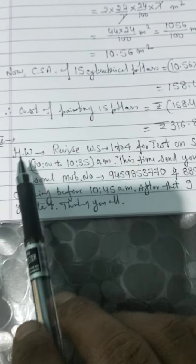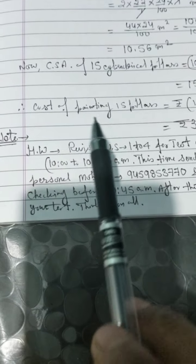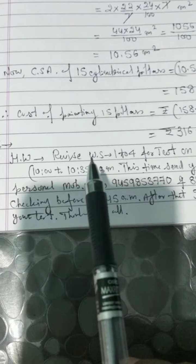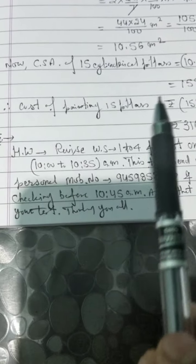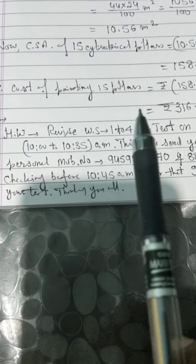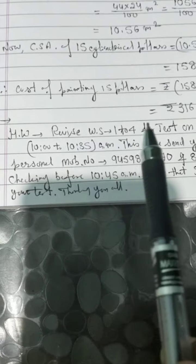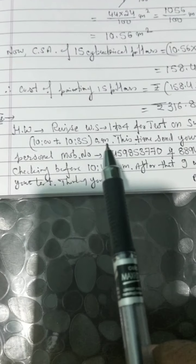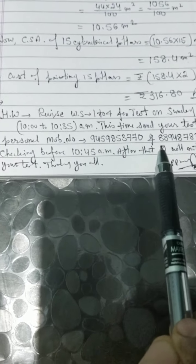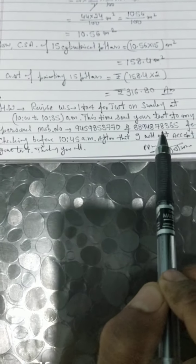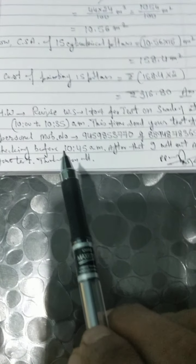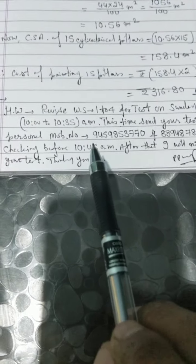Dear children, tomorrow will be your class test of worksheets 1 to 4 of mensuration. This time I have changed it a little — you send me your test after completion, as the test timing is 10 a.m. to 10:35 a.m. Before 10:45 a.m., all sections A, B, C, D send on my personal mobile numbers: 9459853700 and 8894878365. I will try to check your test — it will take two or three days, so you have to wait.